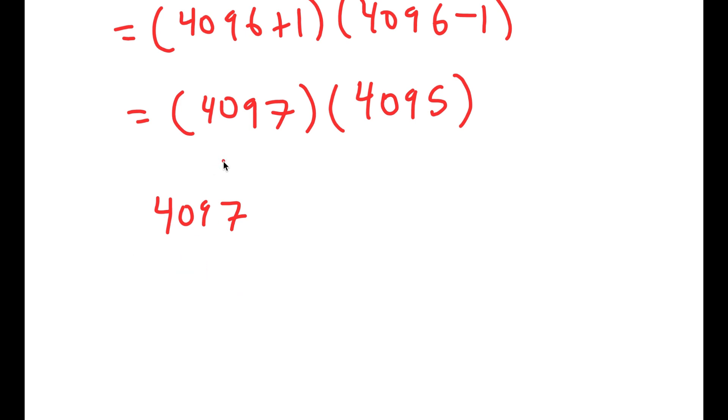So a better way to solve this is actually to rewrite this as 4,000 plus 97 times 4,000 plus 95. Now, because 4,000 has so many zeros in it, it's much easier to solve this problem.